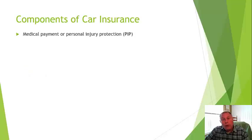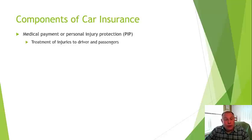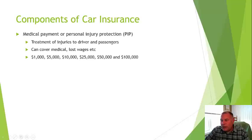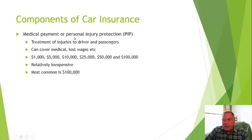Next is medical payment or personal injury protection — PIP. If you're in a car accident, this covers medical treatment for the driver and any passengers, and it can also cover lost wages. It's often bought in increments of $1,500, $10,000, $25,000, $50,000, and $100,000. It's relatively inexpensive — the difference between $10,000 and $100,000 coverage is just dollars — so most people end up with $100,000 because of the low cost.